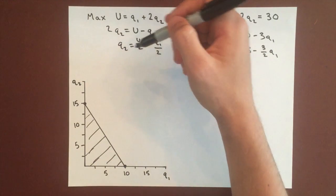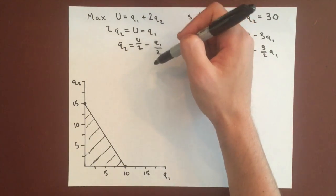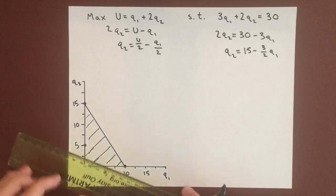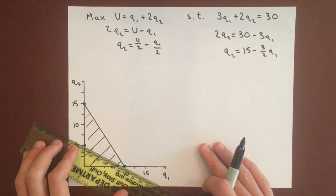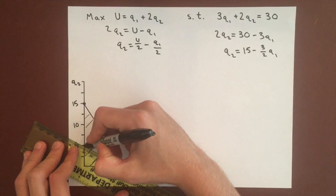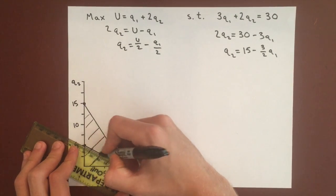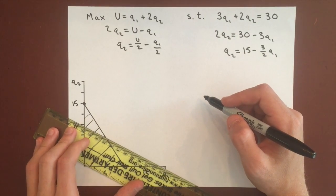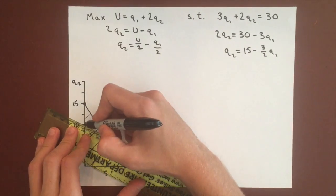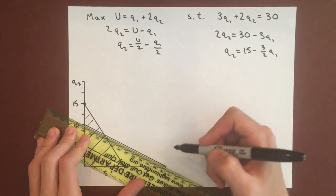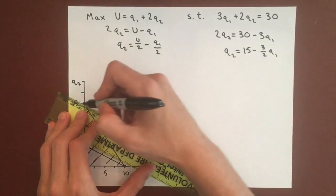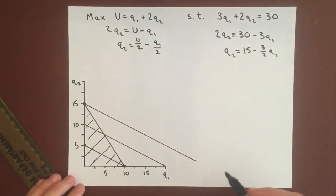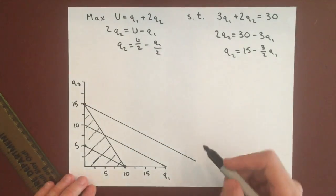We can just draw several indifference curves here, each with slope negative 1 half. We don't need to know the utility because we're just experimenting, but we can keep drawing them. They'll all have the same slope, negative 1 half, and so we see that this last indifference curve,